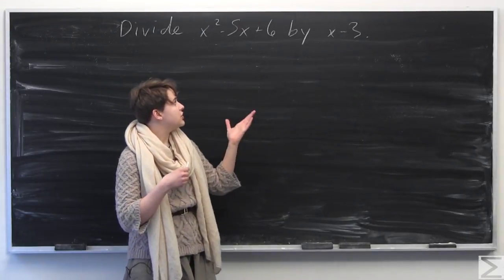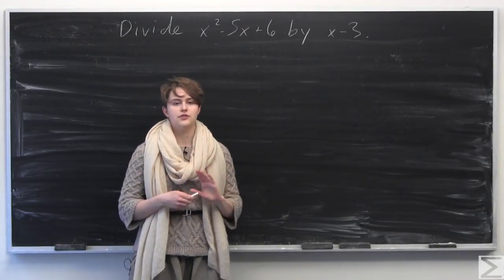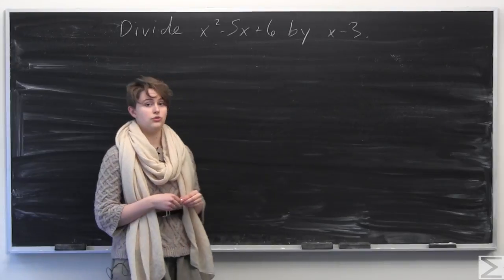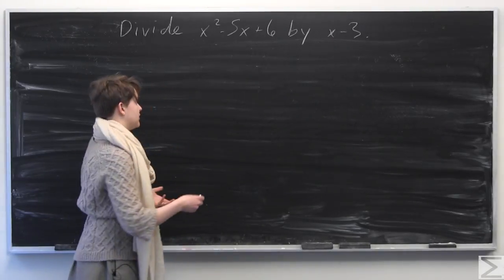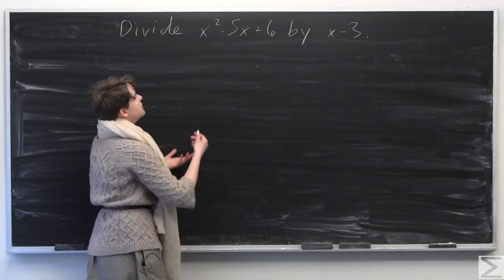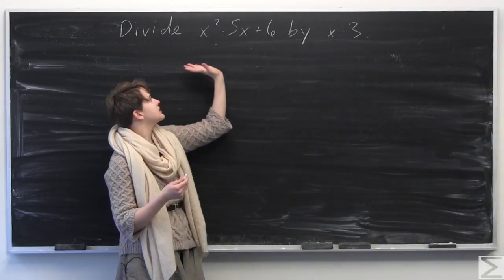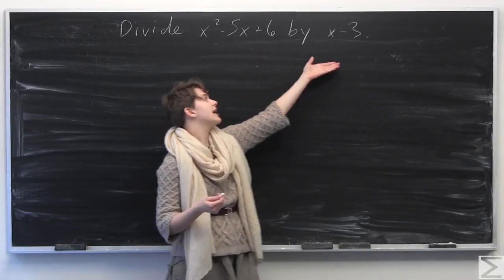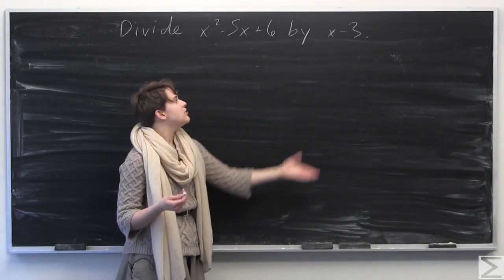The procedure that we're going to use is the same as we would use for regular integer long division. The problem asks you to divide x squared minus 5x plus 6 by x minus 3.